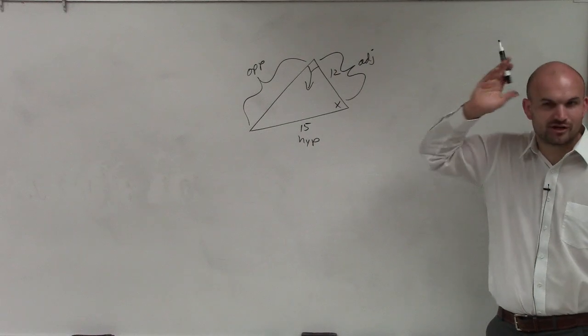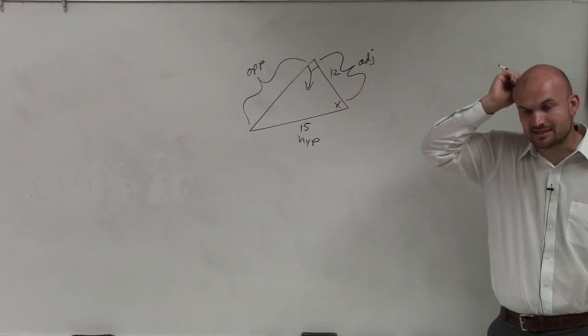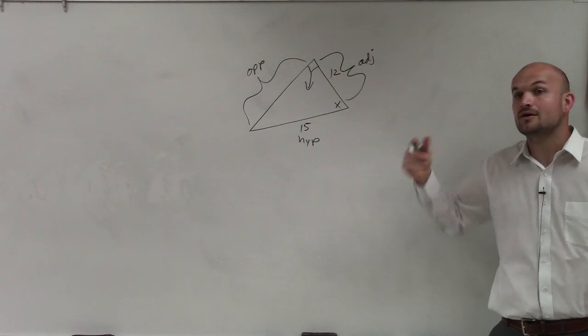Hypotenuse. Now, do you remember which trigonometric function deals with the adjacent and the hypotenuse? There's only one. Cosine.